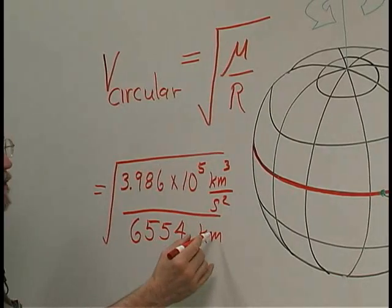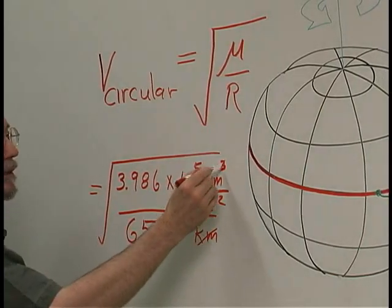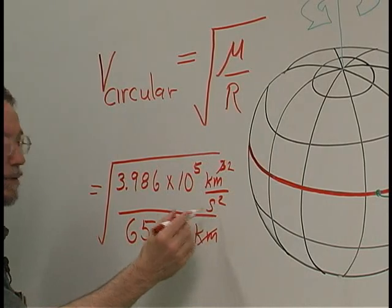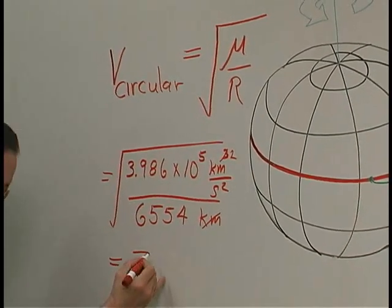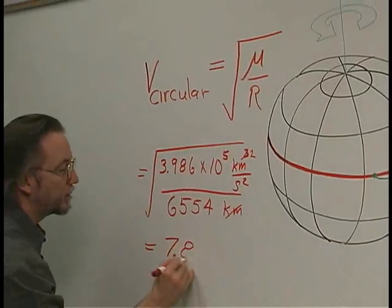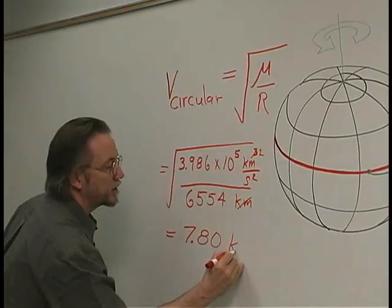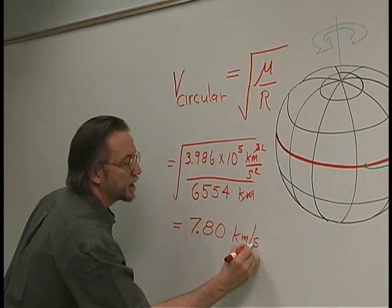Notice that the kilometers will cancel one of the kilometers here. So we have kilometers squared per second squared, and the answer turns out to be 7.80 kilometers per second after taking the square root.